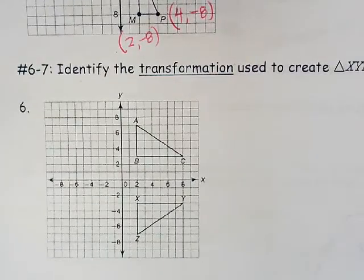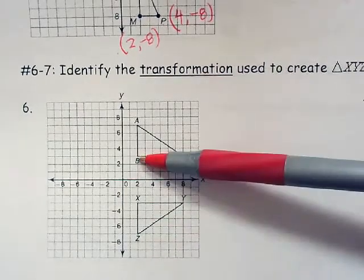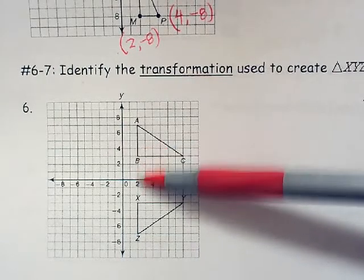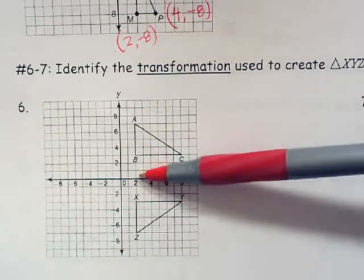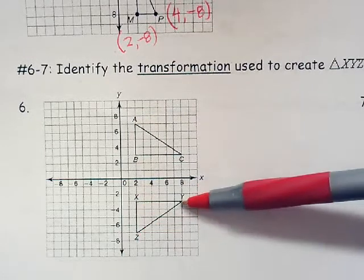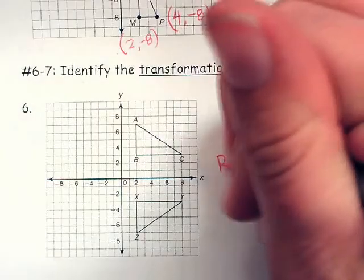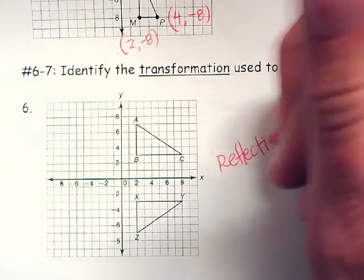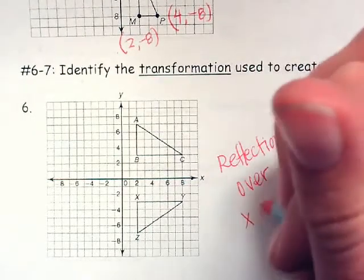Number 6: identify the transformation used to create triangle XYZ. This is a reflection. B is 3 away from the X-axis; Z is also 3 away. A is up 7, Z is down 7. C is up 3, Y is down 3. So this is a reflection over the X-axis.